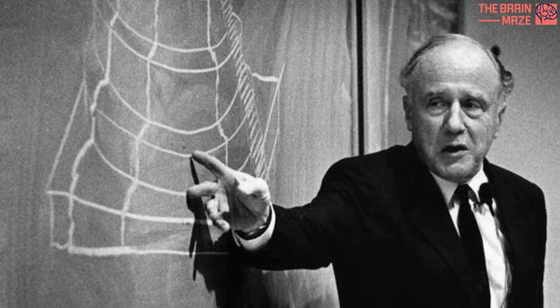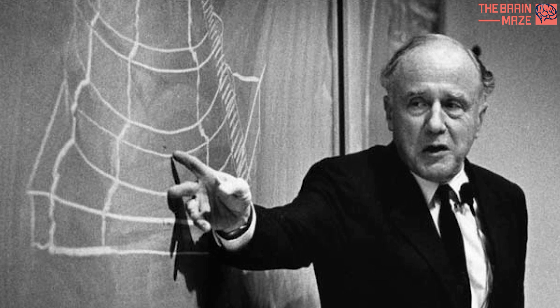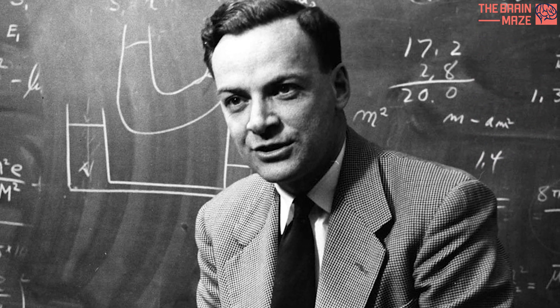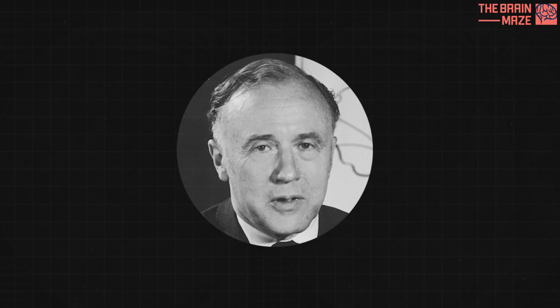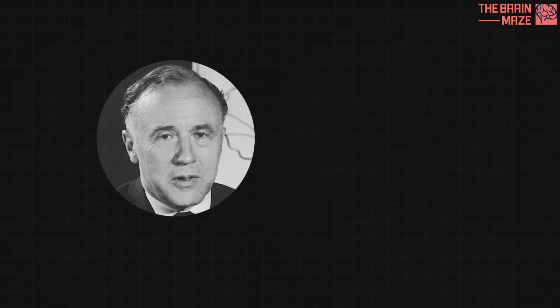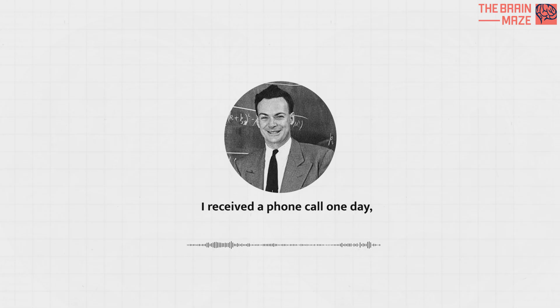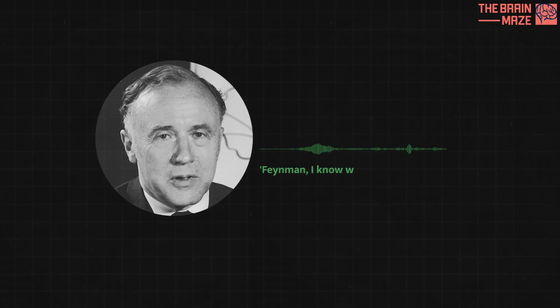Enter John Wheeler, a brilliant physicist with a penchant for audacious ideas. In a now-famous phone call with his former student Richard Feynman, Wheeler proposed a radical explanation. What if electrons and positrons are actually the same fundamental particle? I received a telephone call one day, from Professor Wheeler, in which he said, Feynman, I know why all electrons have the same charge and the same mass. Because they are all the same electron.